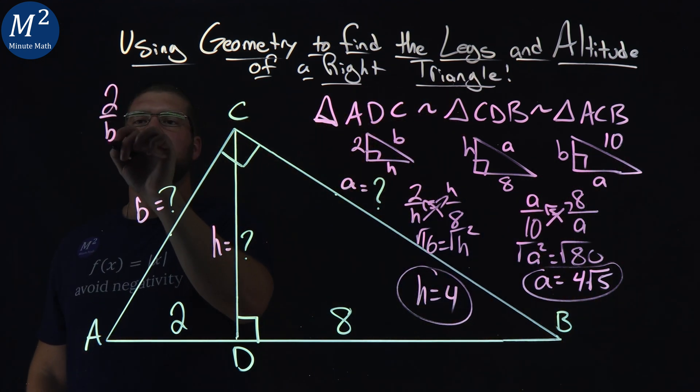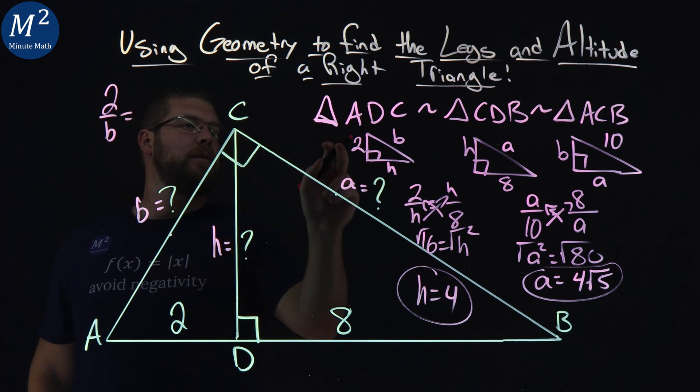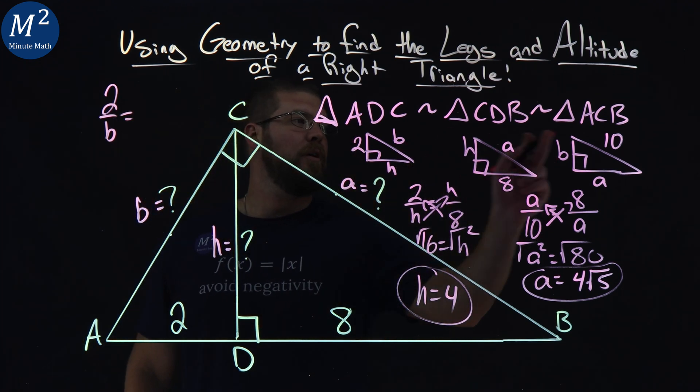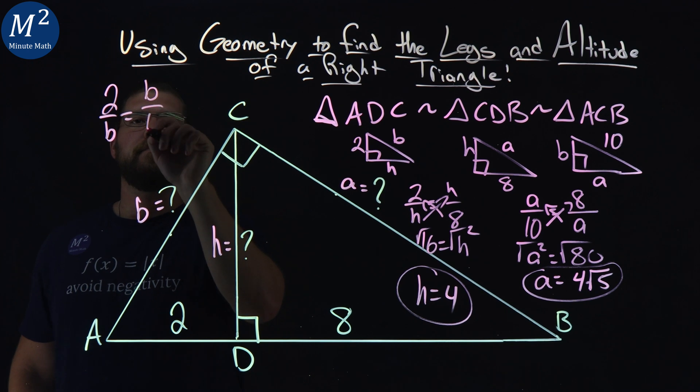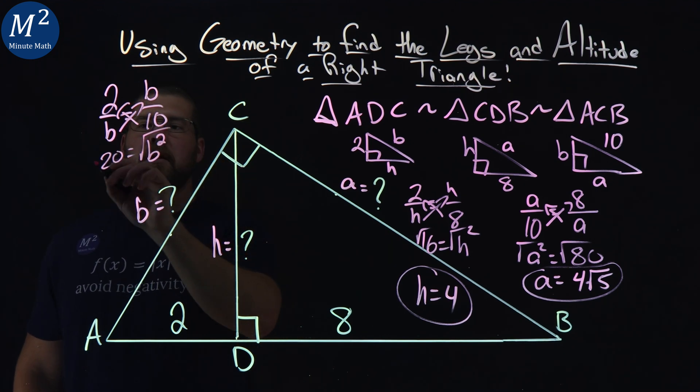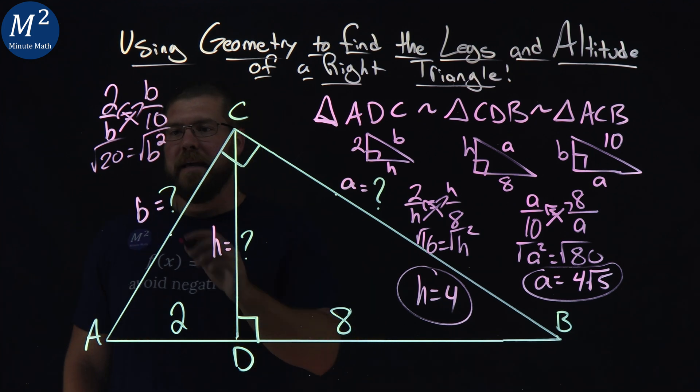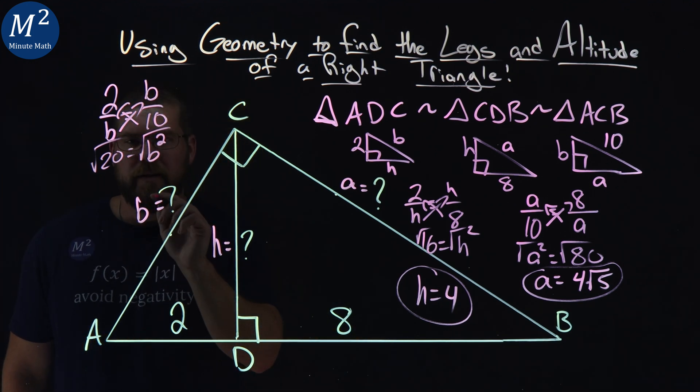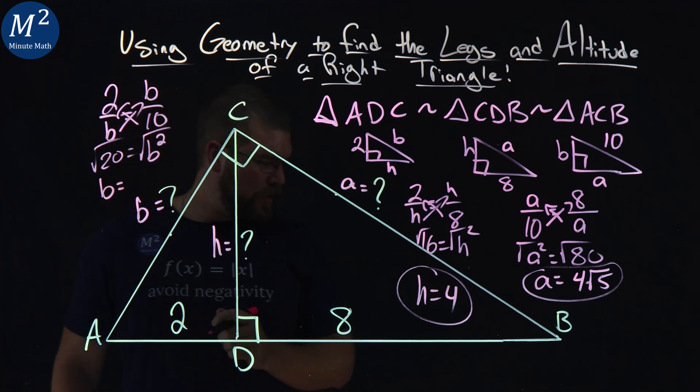So 2 over b is equal to b over 10. Cross multiply always. 10 times 2 is 20. You should get that. It equals b squared. B times B is b squared. Square root both sides. And b, that's right here. Isn't it lovely how that happens? B equals square root of 20.